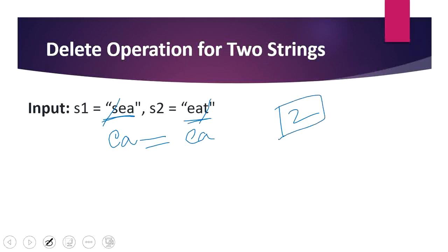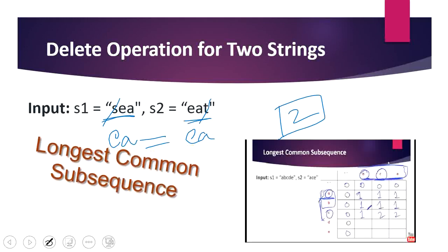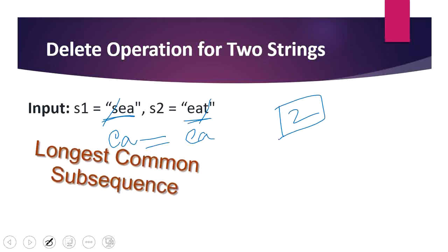How are we going to approach this problem? We are going to discuss two different algorithms for the same problem using dynamic programming. The first one is longest common subsequence. LCS is a familiar DP problem we have already covered in our channel. I have given the description below — you can check that for a detailed explanation of what LCS is.